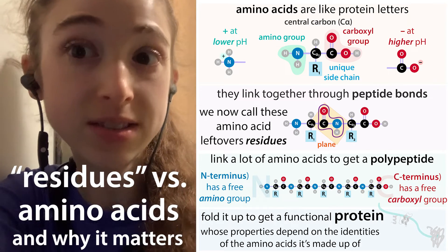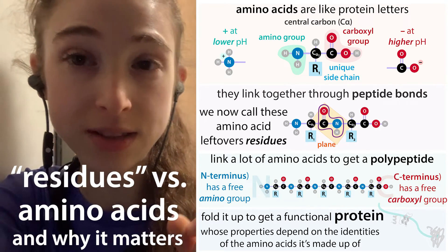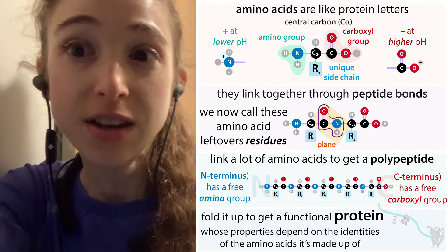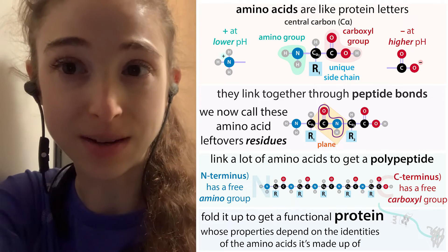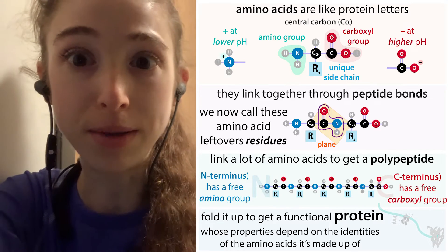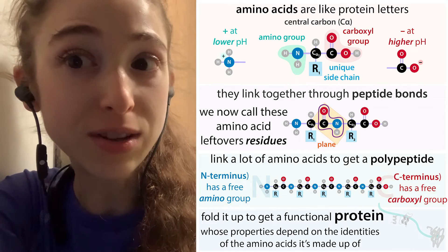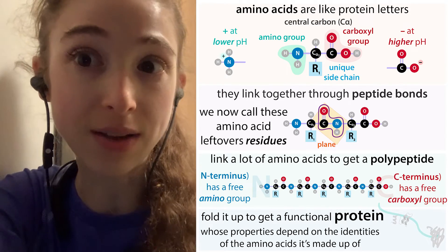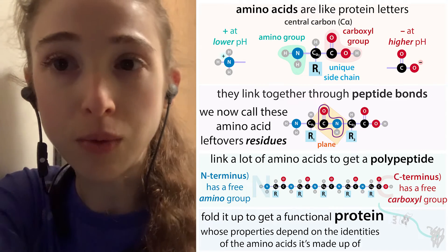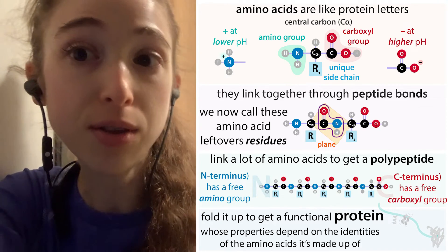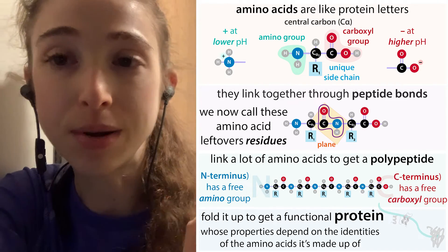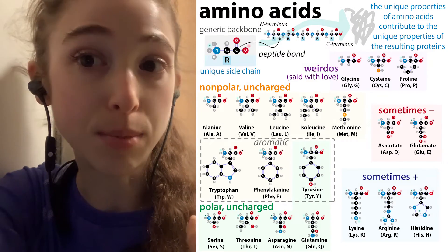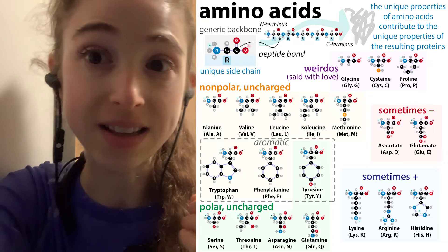When amino acids, like individual protein letters, link up to form peptides — short chains or longer chains that fold up, that is proteins — they do so using their amino parts and their carboxylic acid parts. And so they're no longer amino acids, and we still need a way to refer to them, so we call them residues. It's really important that we have a way to refer to what's left over, because although they've lost that amino and that acid part, they still have their unique part, their side chain or R-group.